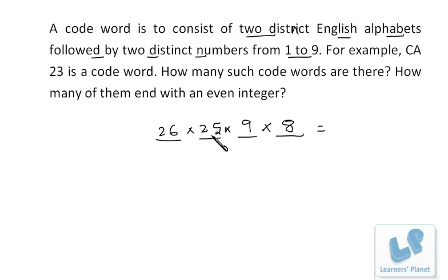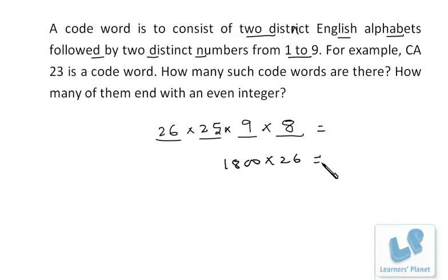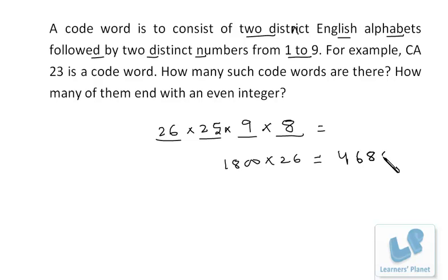Calculating: 25 × 8 = 200, 200 × 9 = 1800, 1800 × 26 = 46,800. So the total number of code words is 46,800.